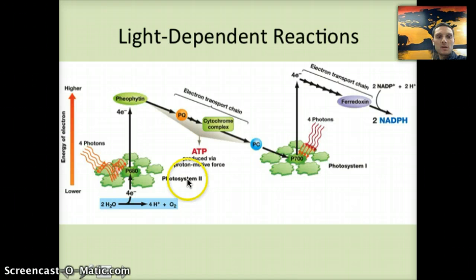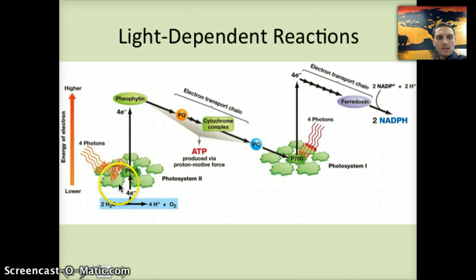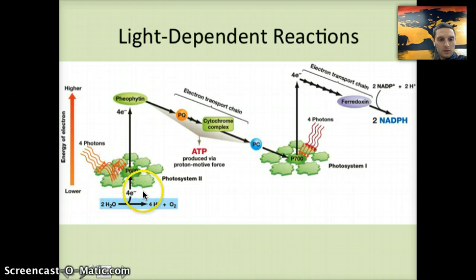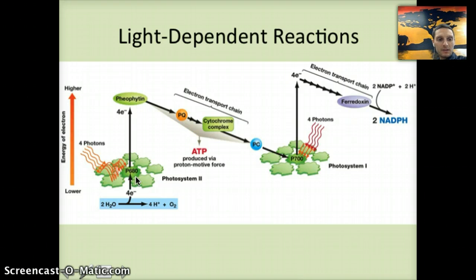The reason this first one is called photosystem 2 is because it was discovered second; photosystem 1, which we'll see in a moment, was discovered first. What these photosystems do is absorb sunlight — specifically the photons from sunlight — and that light energy bounces around the different chlorophyll molecules until it reaches a particular chlorophyll, specifically P680. When that happens, electrons held at this photosystem are excited and pushed to a higher energy level.